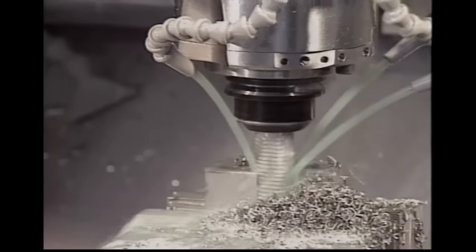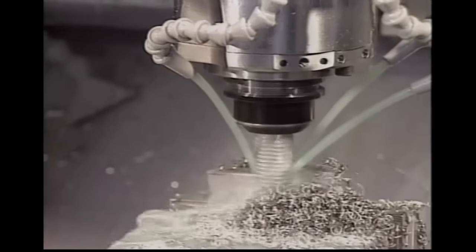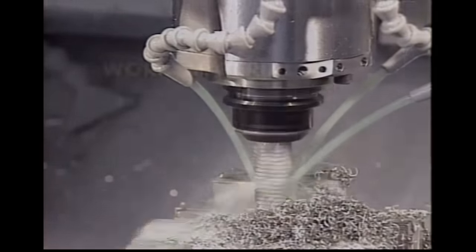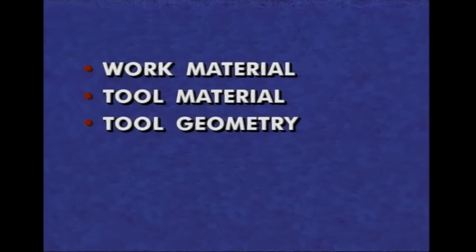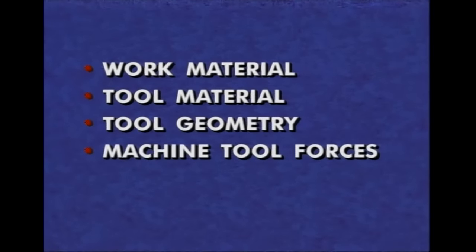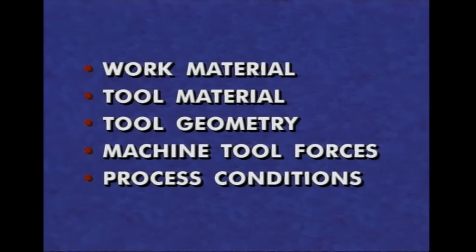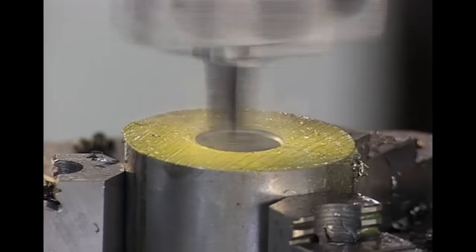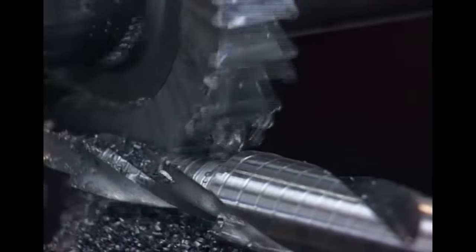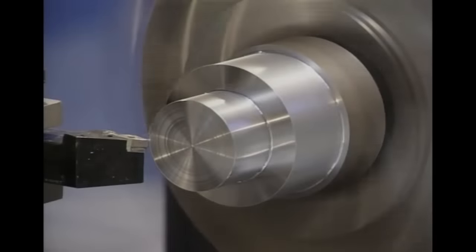How that material failure and chip formation takes place is influenced by the work material, the tool material, the tool geometry, the forces applied by the machine tool, and various conditions in the process such as heat and vibration. An efficient cutting tool geometry is one that minimizes heat in the cut and achieves a cool, properly formed, manageable chip while cutting the given workpiece material.